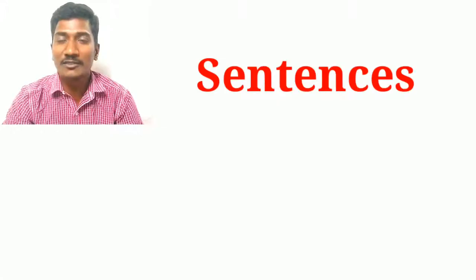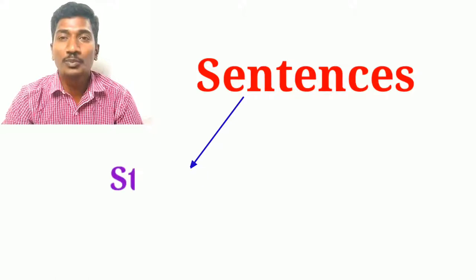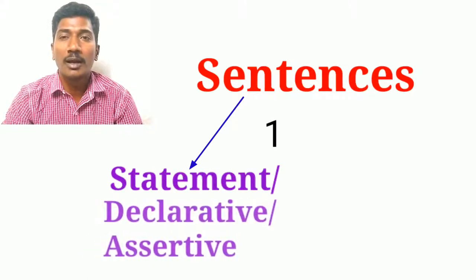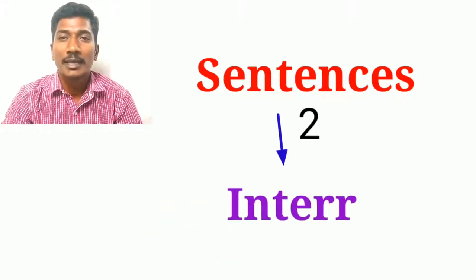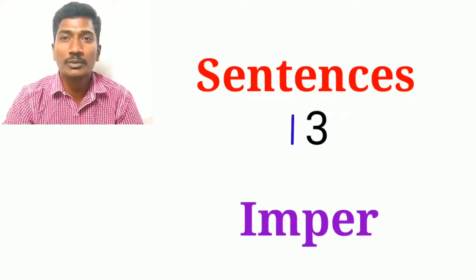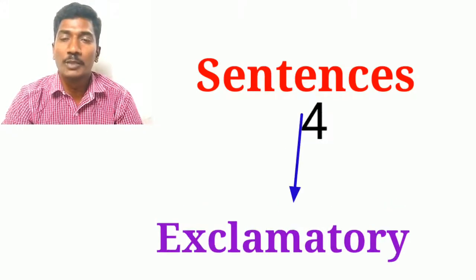In English, there are four different kinds of sentences. The first is statement, also called declarative or assertive. The second one is interrogative. The third one is imperative. The fourth one is exclamatory. These are the four different kinds of sentences in the English language. Let's discuss them one by one.